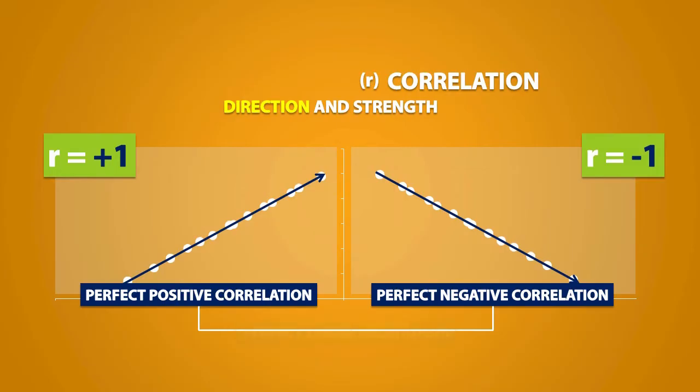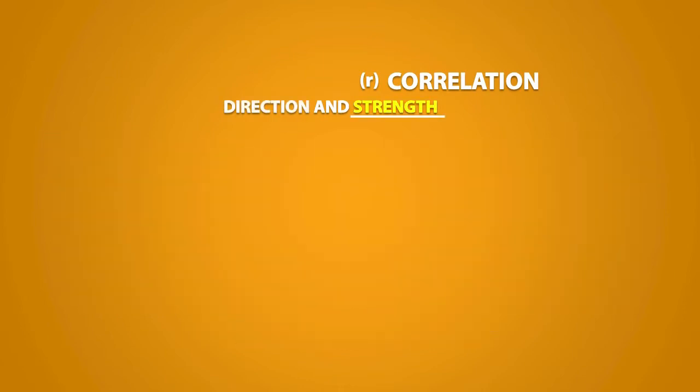In both of these cases, we have a perfect linear relationship. Correlation measures the strength of this linear relationship. We can actually notice a pattern about how correlation measures strength.